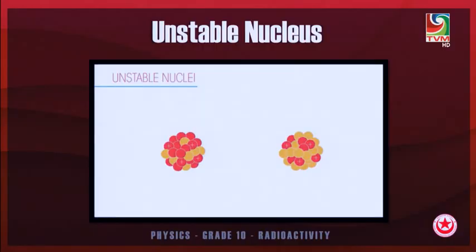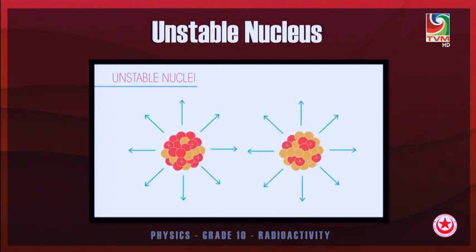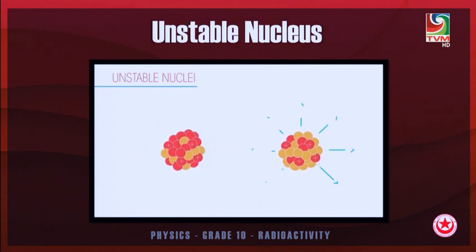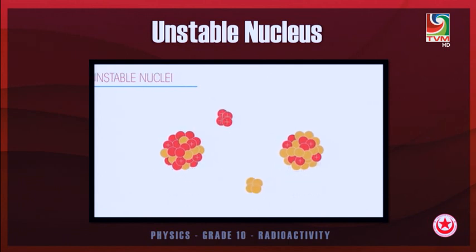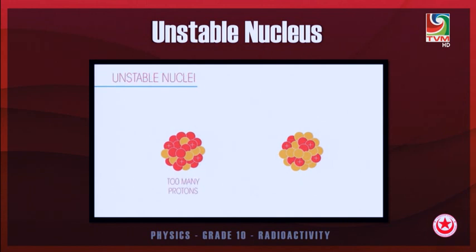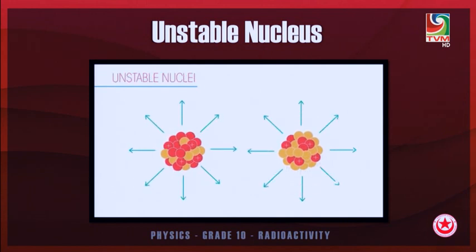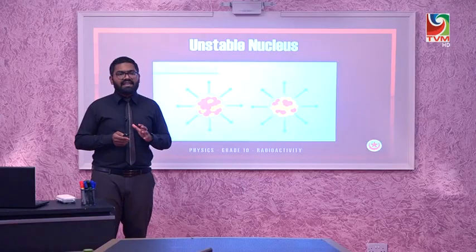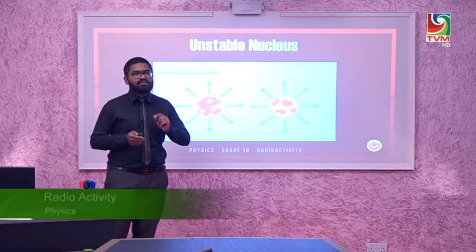When we talk about an unstable nucleus, the case is different. Sometimes the nucleus may have an extra number of protons and sometimes an extra number of neutrons. As a result, it becomes unstable. This process is what we call radioactivity, and in this state radioactive decay occurs.